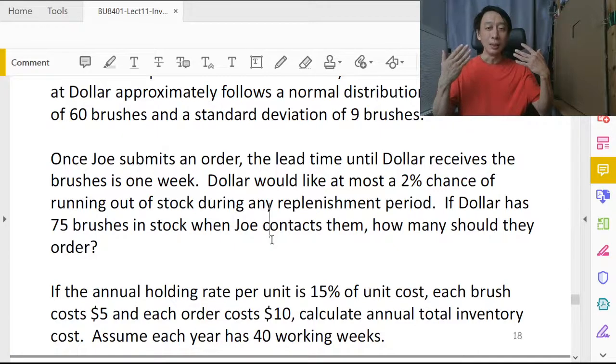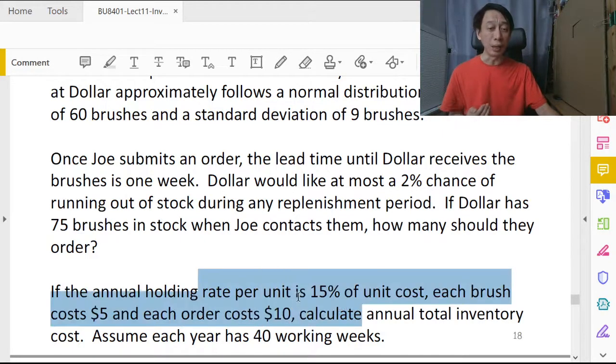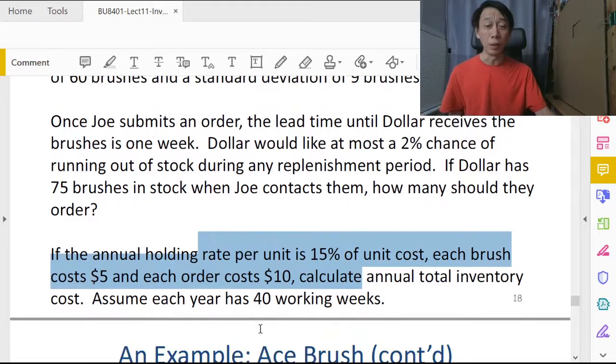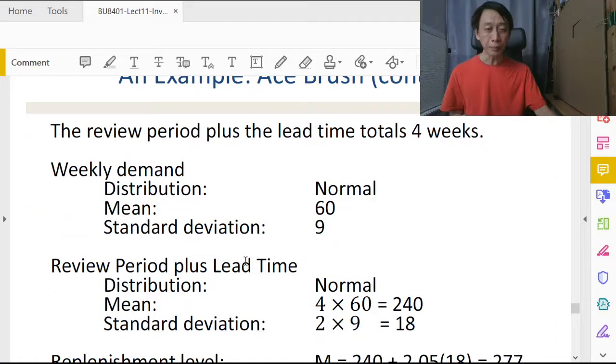That's basically wanting us to work out an inventory policy based on periodic review with dynamic demand, knowing that daily or weekly demand is normally distributed. Then further we are given the annual holding cost rate and the cost and setup cost to calculate the inventory cost annually.